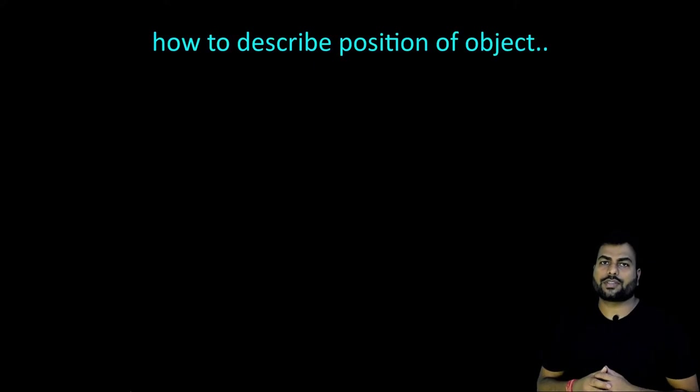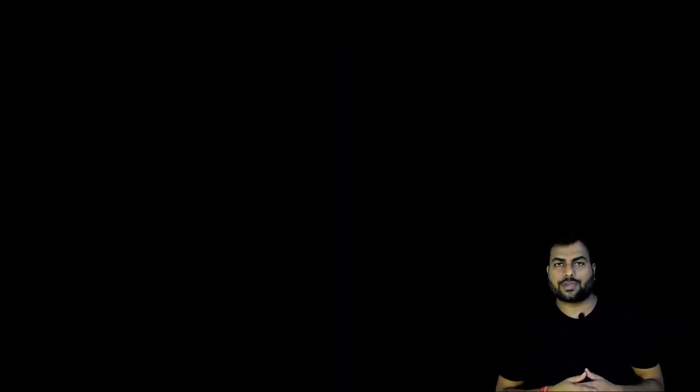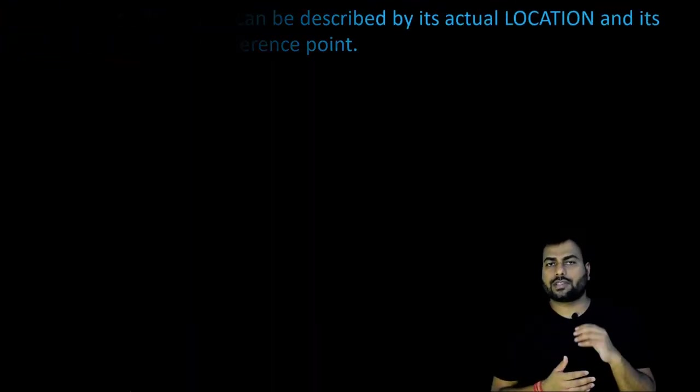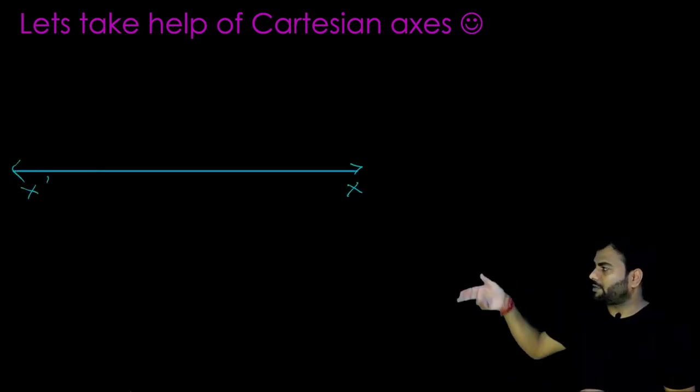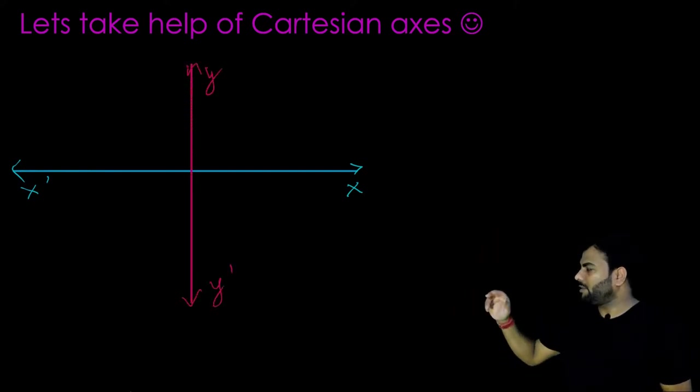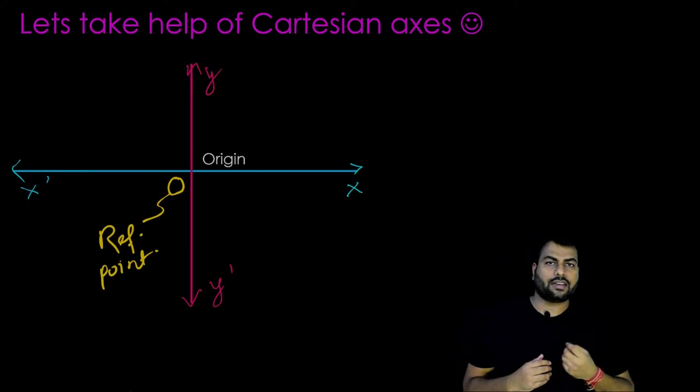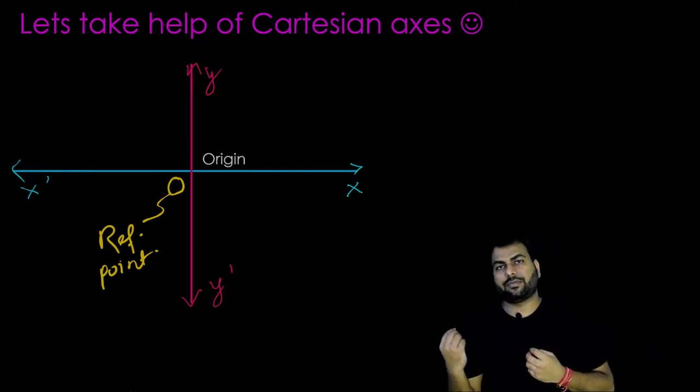Now we'll see how to describe the position of the object. The position of the object can be described by its actual location and its direction from the fixed reference point. Let us take the help of the Cartesian axis. Here we can see we have two axis and where the axis meets, we mark it as origin. Position x is taken towards right of the origin and negative x is taken towards the left of the origin.